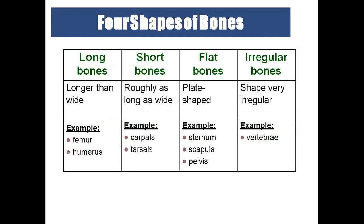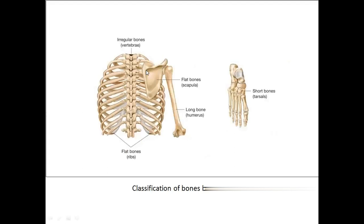There are four shapes of bones: long bones, short bones, flat bones, and irregular bones. Long bones include the femur and humerus. This is the vertebral column with the vertebra — the lamina is this part, and it is removed in laminectomy to relieve pressure on the spinal cord. Vertebrae are irregular bones. The scapula — also called the shoulder blade — is a flat bone.